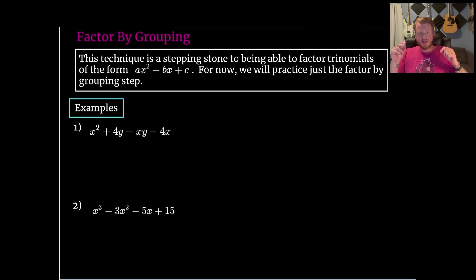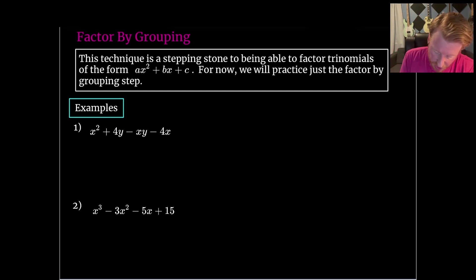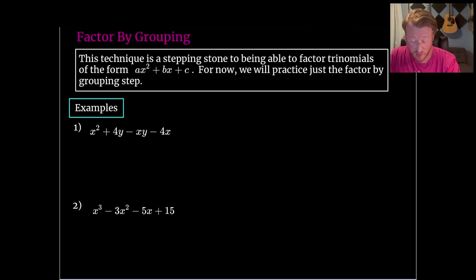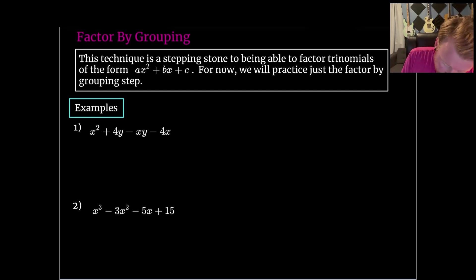The first thing we should always try is to see if there's a GCF. We can see there are some x's, y's, and 4s floating around, but nothing common in all terms. This x term doesn't have a 4 or a y; this term doesn't have an x; this term is missing a 4; etc. So there's nothing we can do with a GCF the way it's written, but maybe we could group these. We can move some terms around and try to group items together and factor that way.